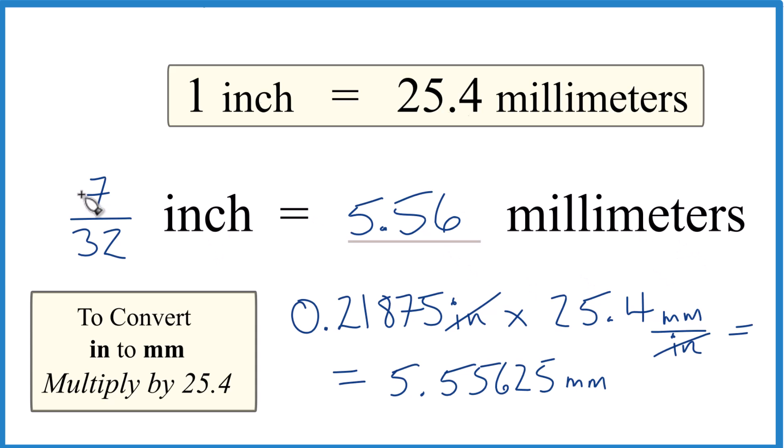So in answer to our question, 7/32 of an inch, when we convert that to millimeters, we get 5.56 millimeters.